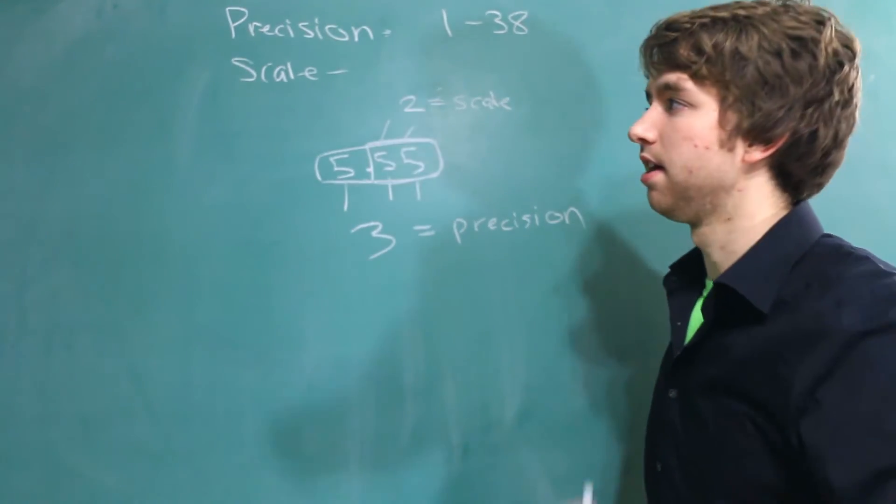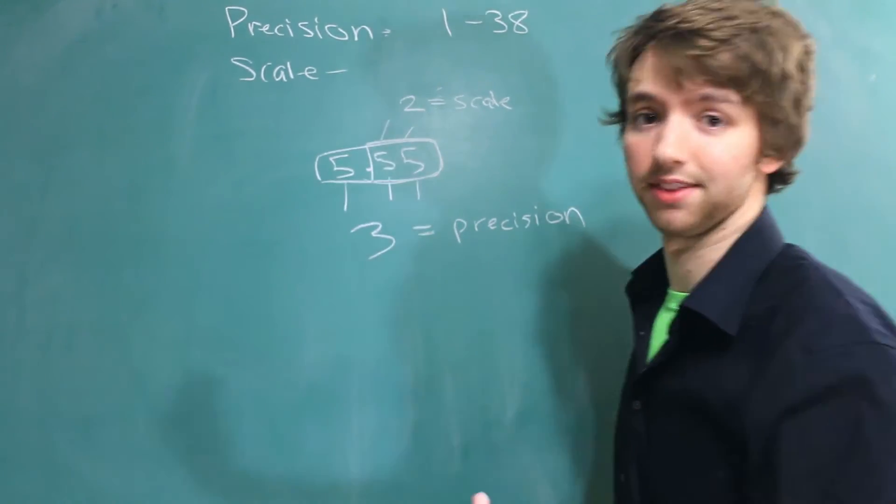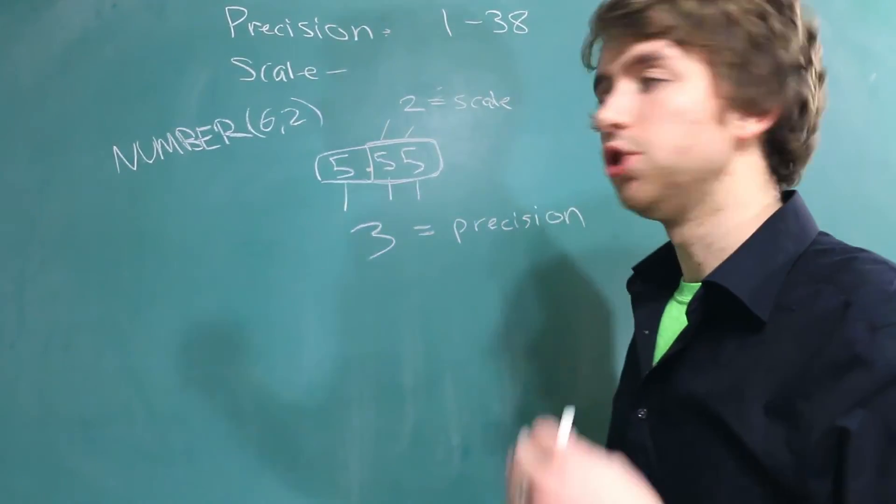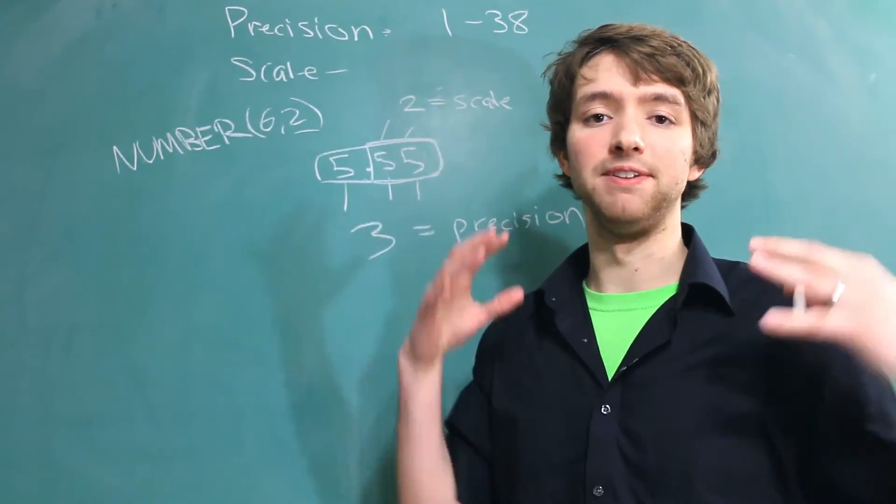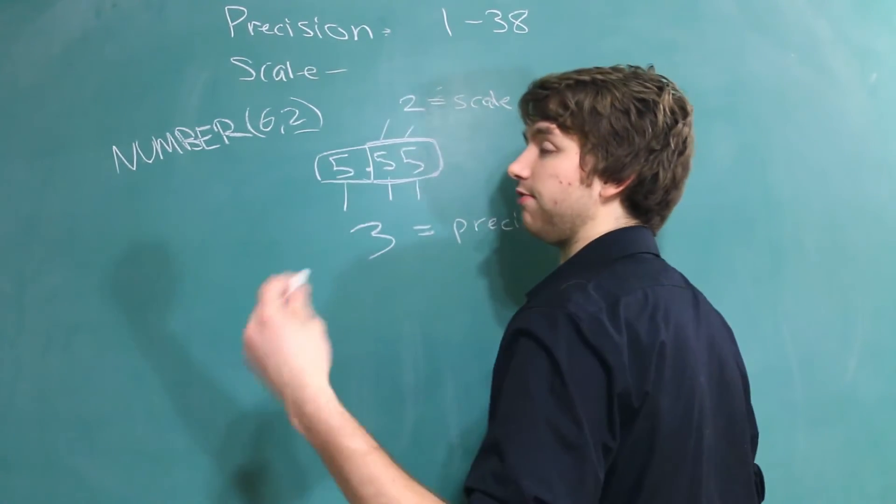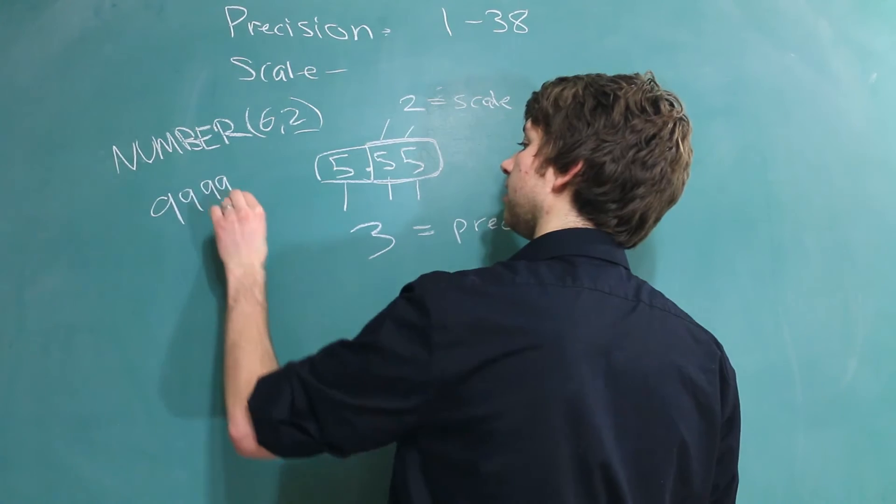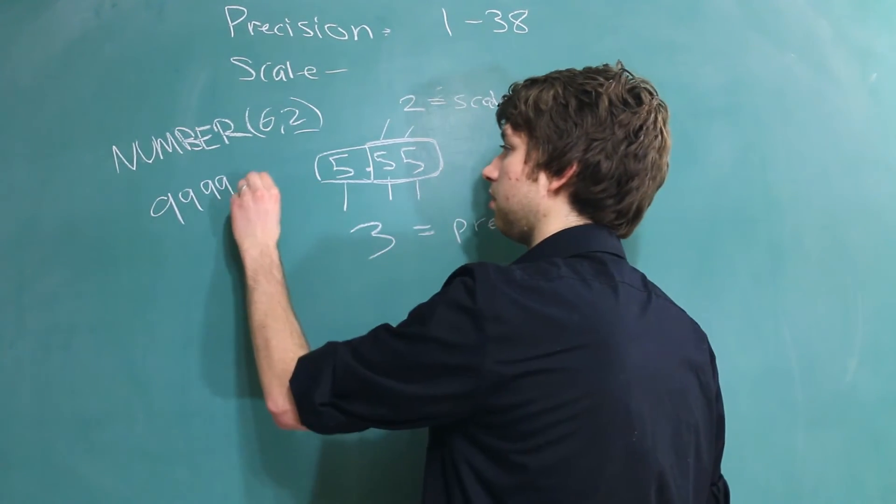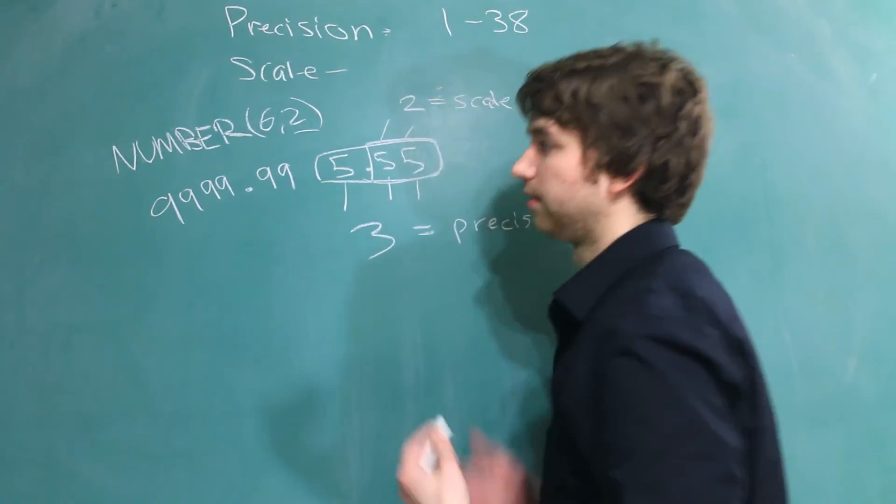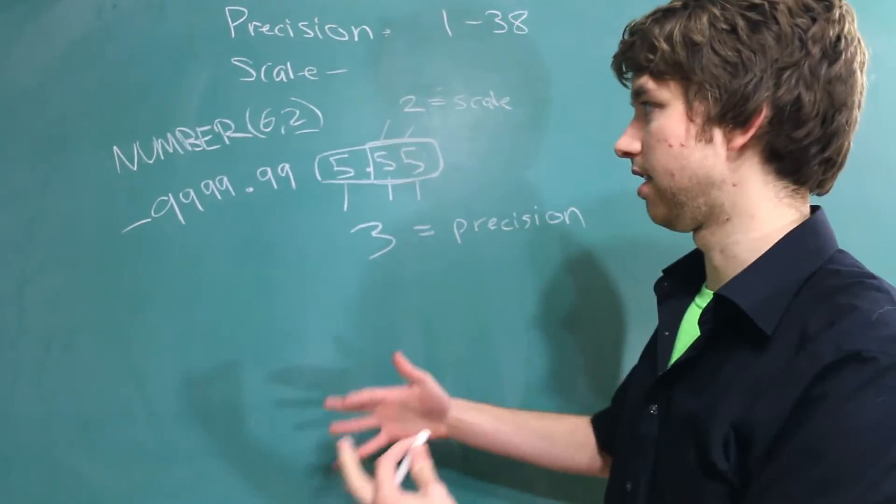So to quiz you a little bit, think about the maximum and the minimum values for something like this. To figure this out you can subtract the scale from the precision, and that will give you the number of digits before the decimal. So we're going to have 4. And the biggest numbers would be 9999. And 2 of those are going to be reserved for after the decimal. 99. And also the negative of that. So negative 9999.